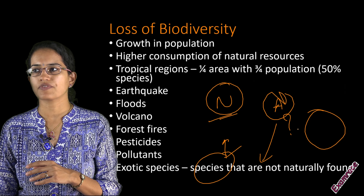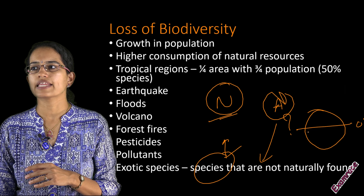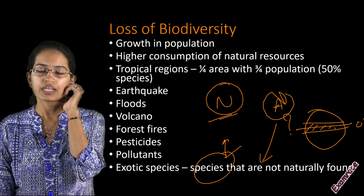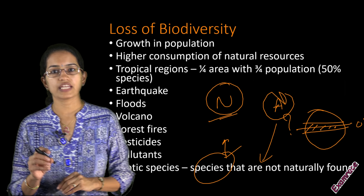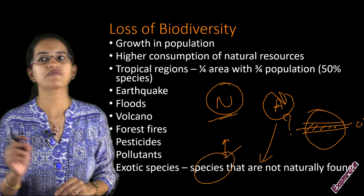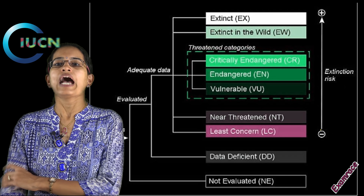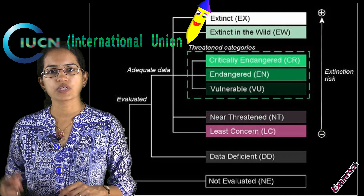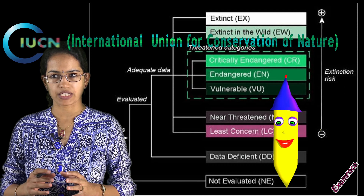If we look at the Earth map, we have zero degrees equator and then the regions of the tropics surrounding it. This region of the tropics accounts for one-fourth of the area but three-fourths of the population and 50% of the species that exist globally. IUCN, or the International Union for Conservation of Nature, has laid down a classification.